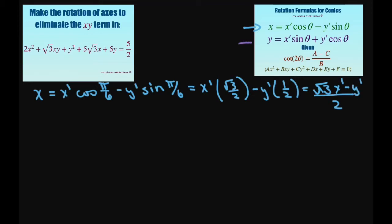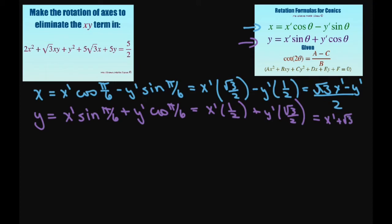Now for the y, we do basically the same thing. It's going to be a plus, and our functions get changed. So we have sine of pi divided by 6, which gives x prime plus square root of 3 times y prime all divided by 2.